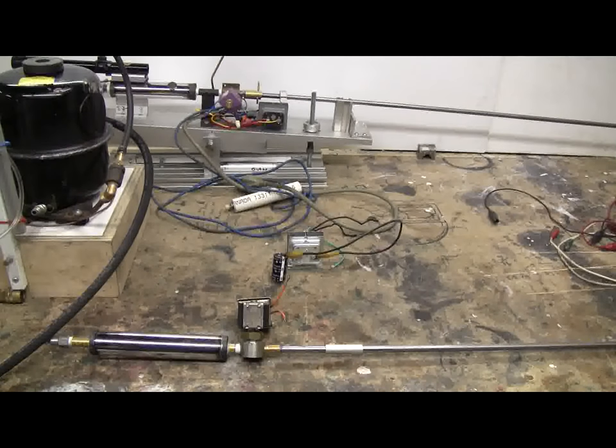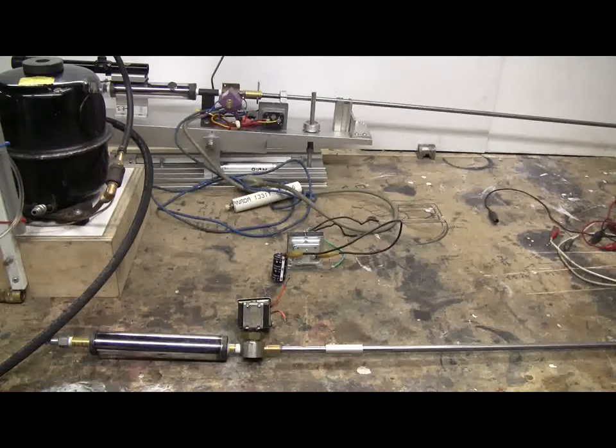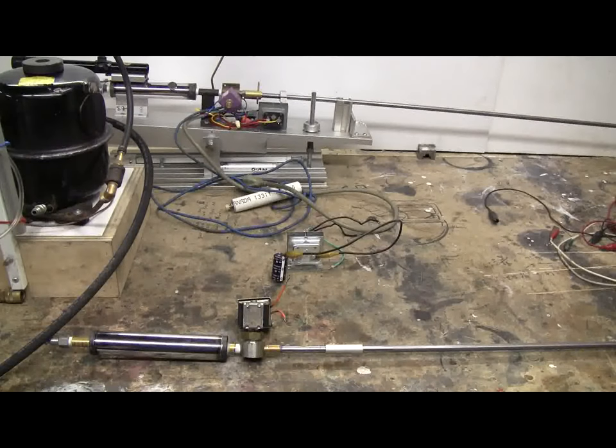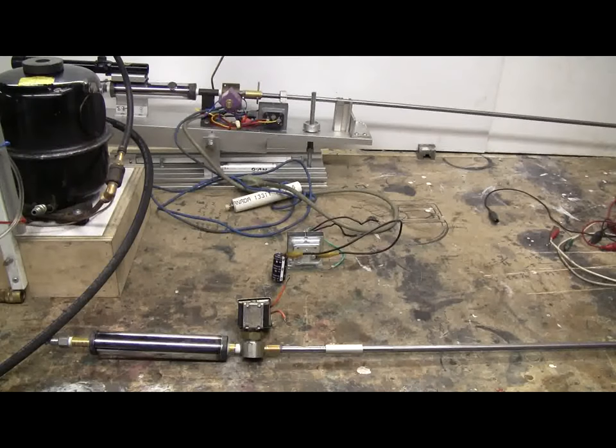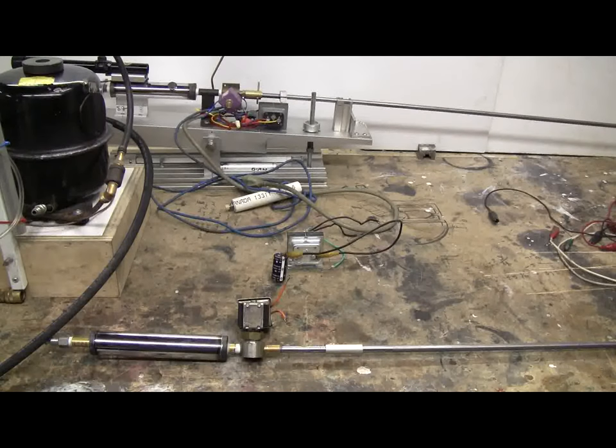Today's video is going to be about two smaller solenoid valves that can be used to make up air cannons. In the background we have my .177 caliber BB cannon based on a 24 volt AC quarter NPT solenoid valve.